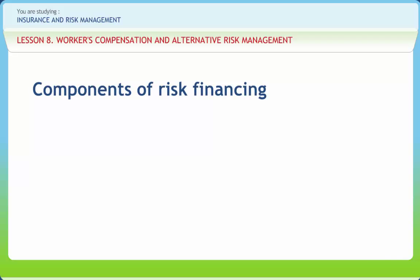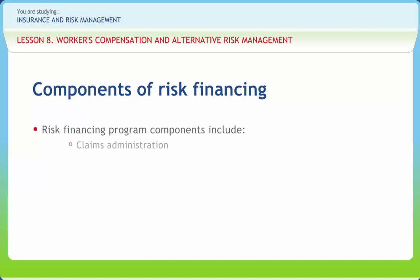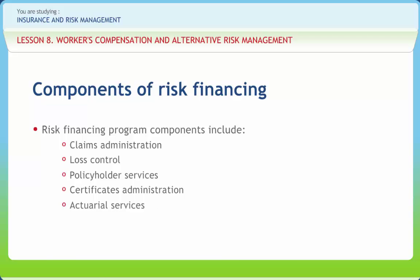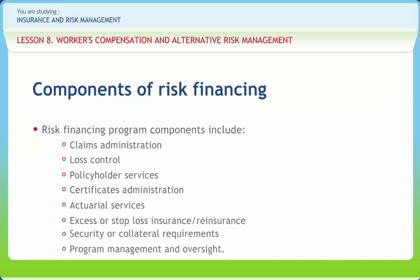The use of alternative risk financing in the form of a high deductible program, self-insurance or captive insurance requires careful coordination of program components. The required services can be purchased independently from vendors or bundled by the insurer that provides excess or stop-loss insurance. Risk financing program components include claim administration, loss control, policyholder services, certificates administration, actuarial services, excess or stop-loss insurance or reinsurance, security or collateral requirements, and program management and oversight. Administrative demands on an organization are accentuated when it purchases unbundled services independent of the insurance arrangement. Purchasing such services, on the other hand, often gives greater control and cost savings.